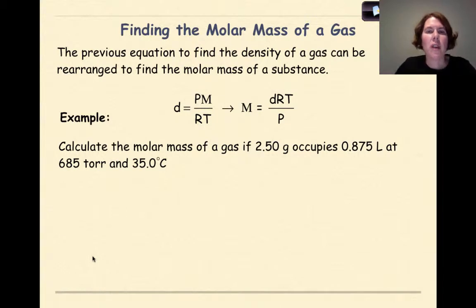So the first thing that we're going to look at is finding the molar mass of a gas. Remember, yesterday we were talking about the density formula in terms of gases. The previous equation to find the density of a gas can be rearranged to find the molar mass of a substance. So we took density equals PM over RT and we switched it around so we isolated molar mass by itself. We have M equals dRT over P.